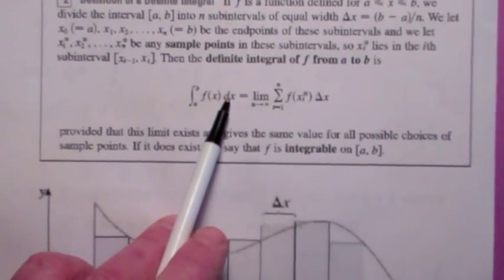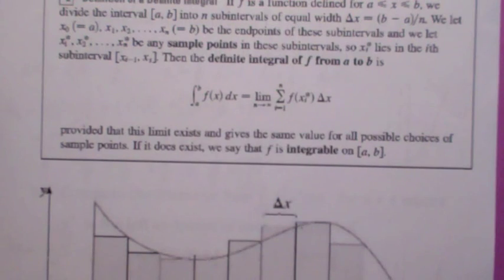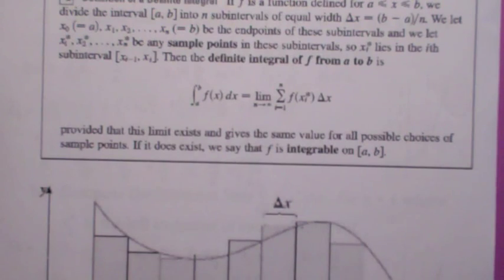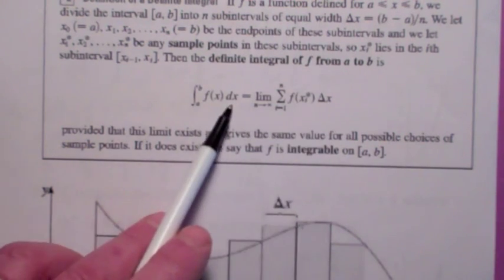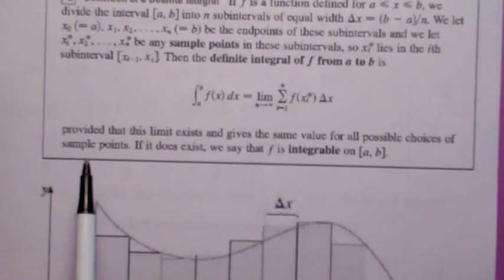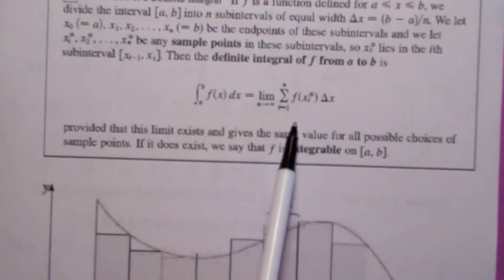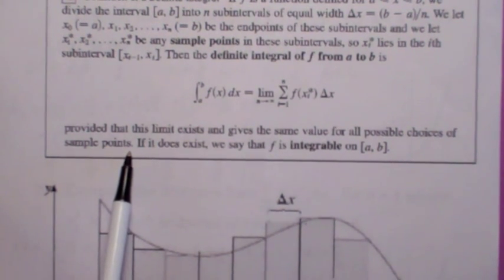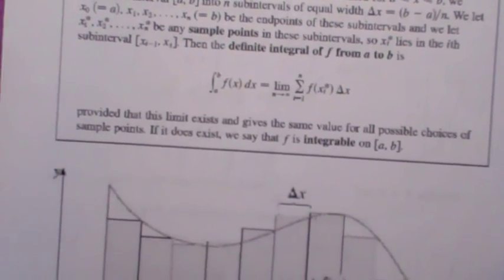And what is this dx? Think of dx as referring to what the independent variable is, or the x-axis here in this case. That tells you which variable is the independent variable. So when you take the limit of the Riemann sum, think of the Δx as becoming dx. That would be okay to do. Now, this is important. This definite integral exists, provided this limit exists. It has to give you the same value for all possible choices of the sample points x_i*. If that happens, then we say the function is integrable on the interval a to b.